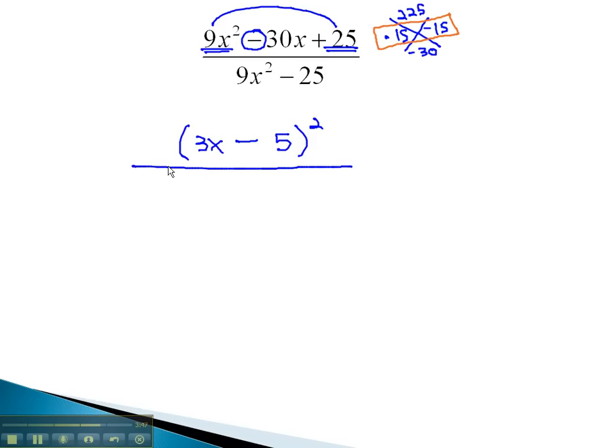In the denominator, we will need to factor the 9x squared minus 25. Notice it's a binomial. We have a difference of squares. Using our difference of squares shortcuts, we know it's going to factor to the sum and the difference of the square roots. The square root of 9x squared is 3x, and the square root of 25 is 5. 3x plus 5 times 3x minus 5.